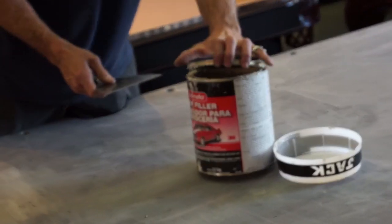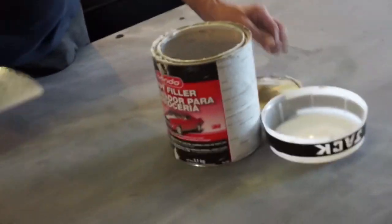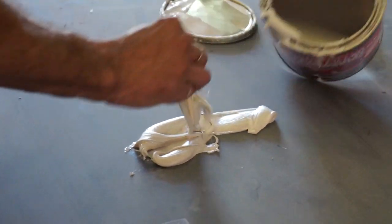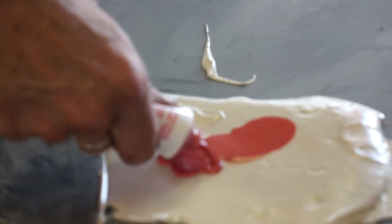To properly seal it, our installer spread bondo on the slate where it joins itself and over the various screw holes. Bondo is an incredibly strong two-piece sealant. It is identical to what they use to fix dents on cars.